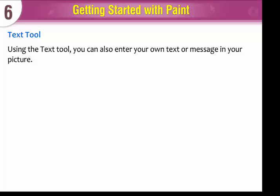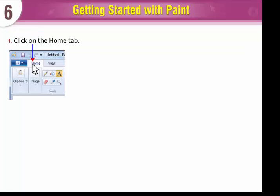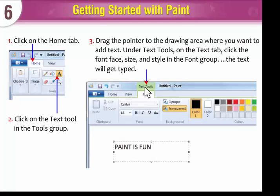Using the Text tool, you can also enter your own text or message in your picture. To use the Text tool, click on the Home tab. Click on the Text tool in the Tools group. Drag the pointer to the drawing area where you want to add text. Under Text Tools on the Text tab, click the Font Face, Size, and Style in the Font group. The text will get typed.